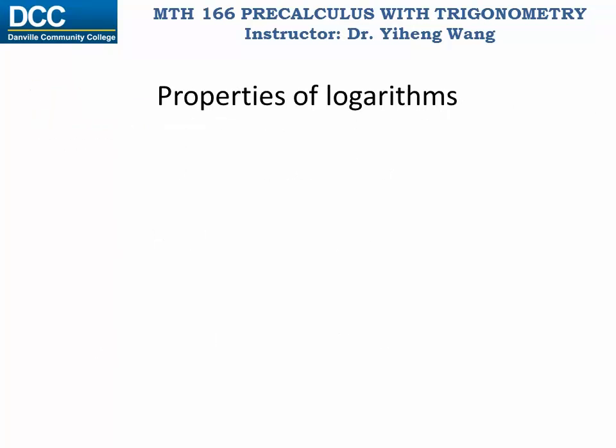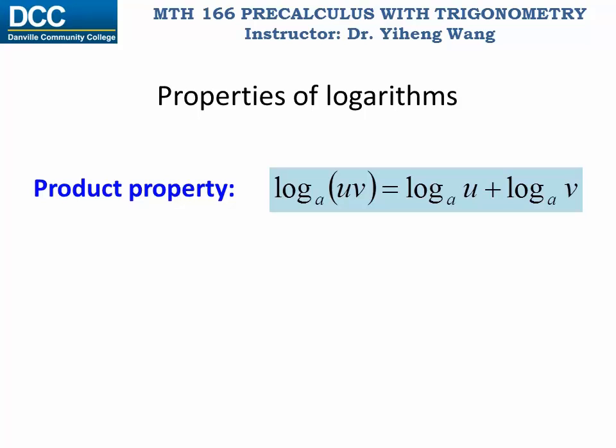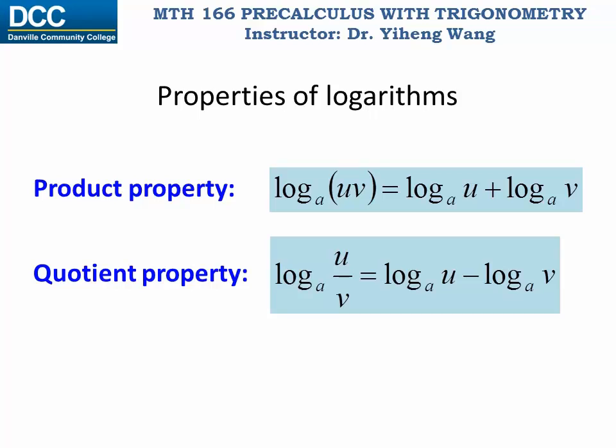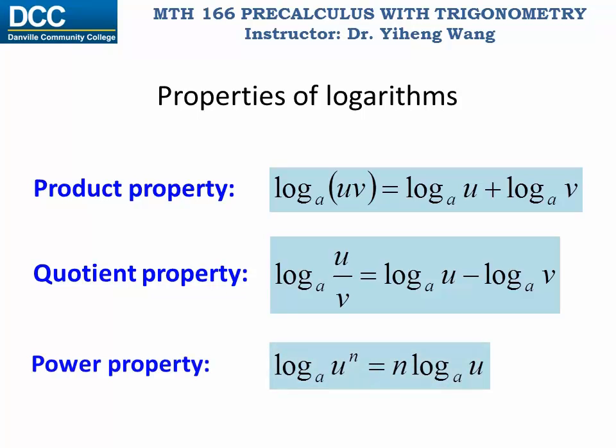Here are some very basic properties of logarithm. First we have the product property: log base a of u times v, or log base a of the product of u and v, equals to log base a of u plus log base a of v. The quotient property: log base a of u over v equals to log base a of u minus log base a of v. And lastly, the power property: log base a of u to the nth power equals to n times log base a of u — we can pull n out as a coefficient.